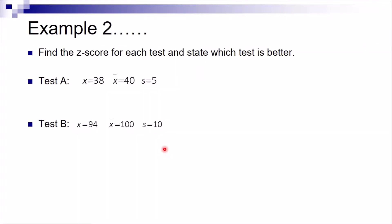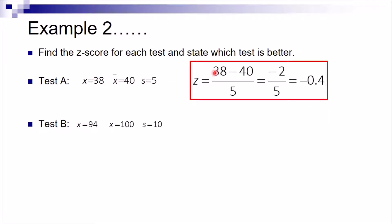Example number two: find the z-score for each test and state which test is better. Using the formula with the given sample mean, standard deviation, and score, for Test A we have 38 minus 40 divided by 5, which gives us negative 2 divided by 5, resulting in a z-score of negative 0.4.